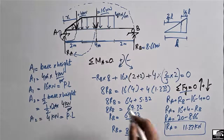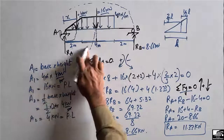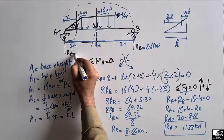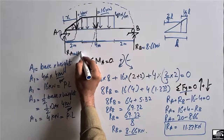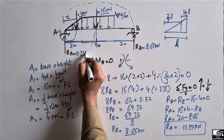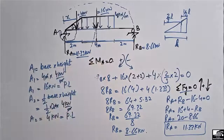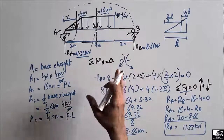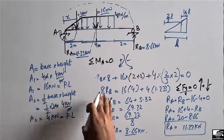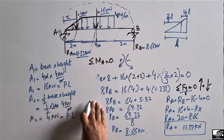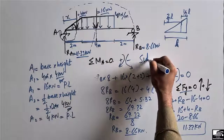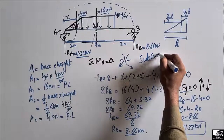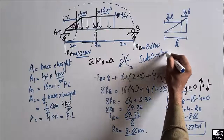The support reaction at support A is 11.33 kilonewtons. I hope you understand how to find support reactions when a uniformly varying load acts on a beam. Don't forget to subscribe to our channel. Thank you for watching.